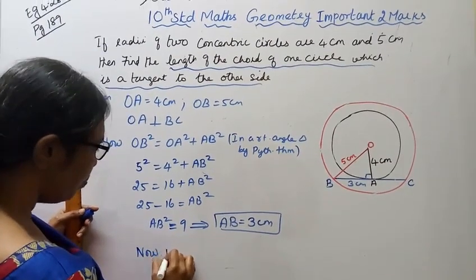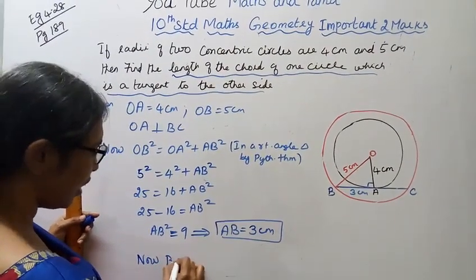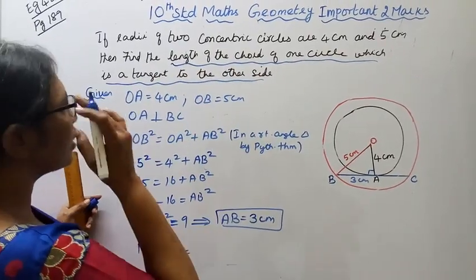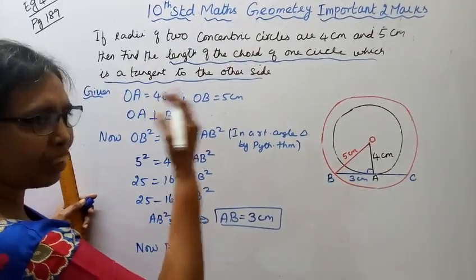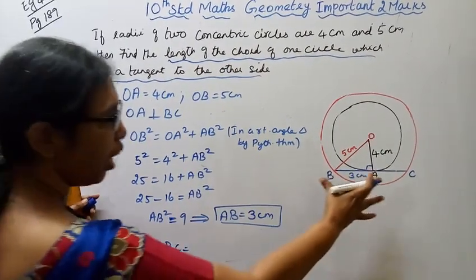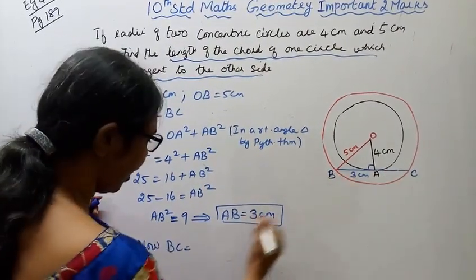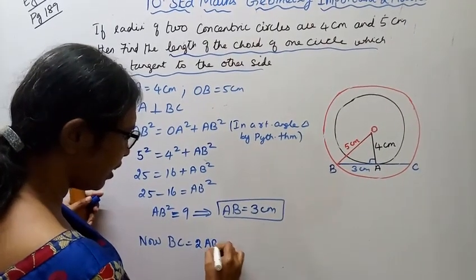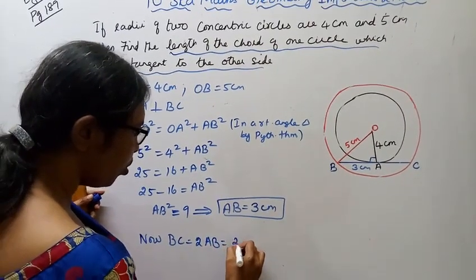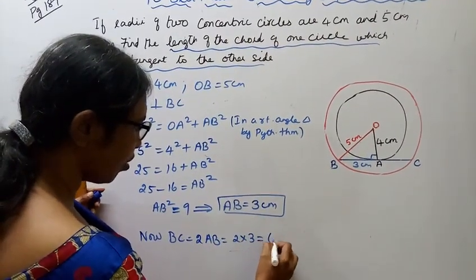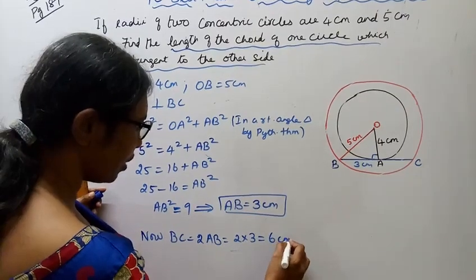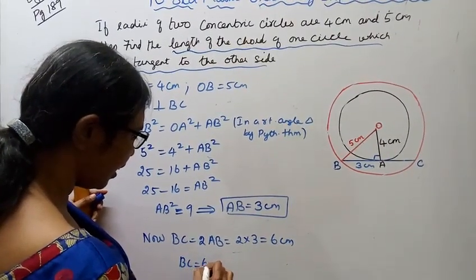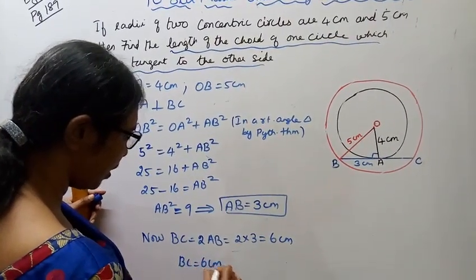Now, BC is the length of the chord of one circle which is a tangent to the other circle. BC equals 2 times AB, that is equal to 2 into 3, which equals 6 centimeters. So BC equals 6 centimeters.